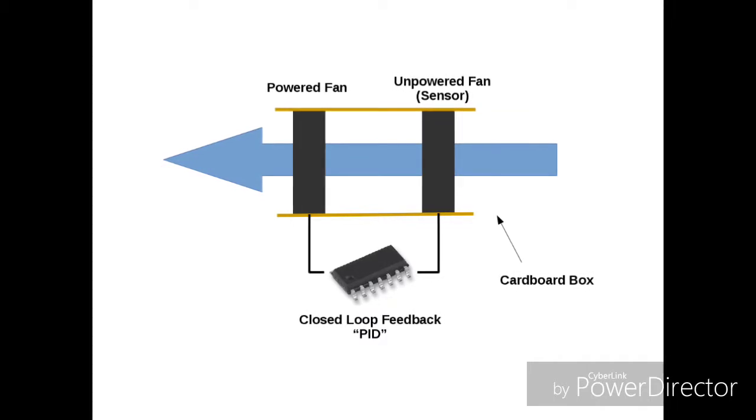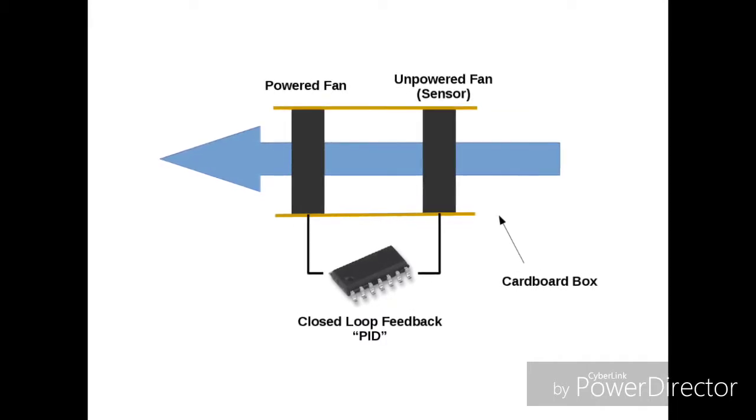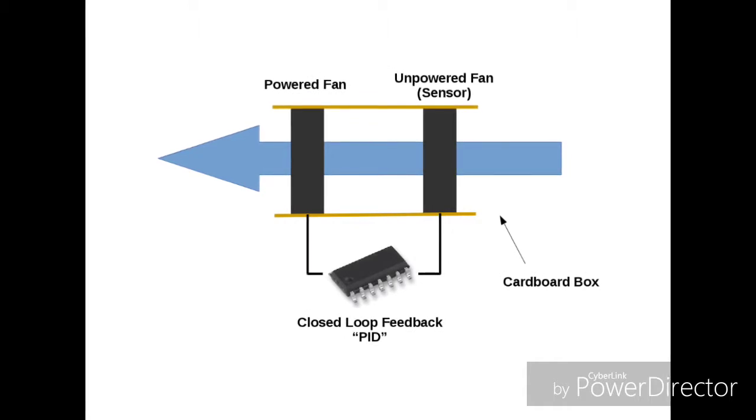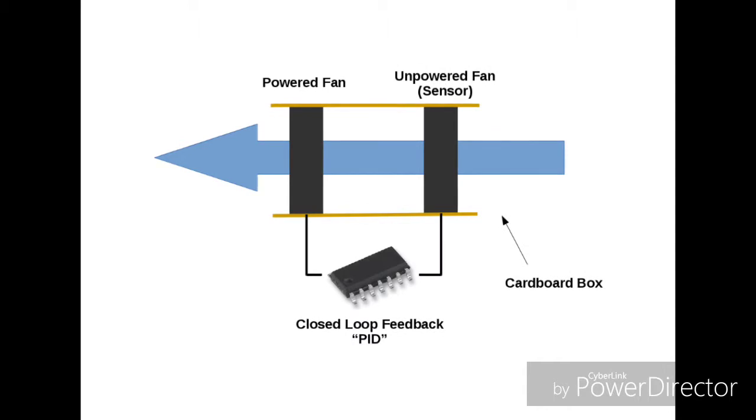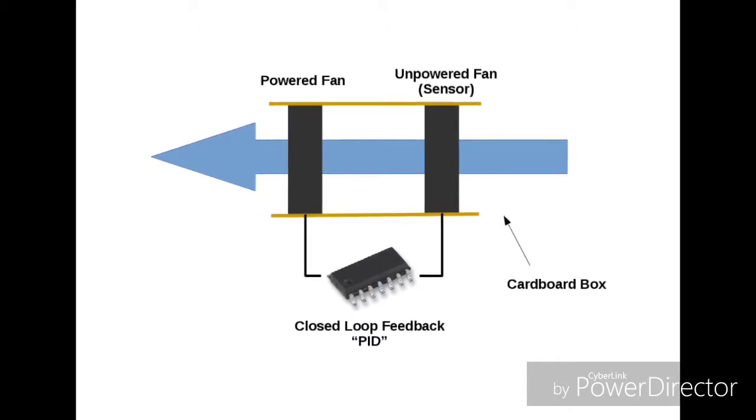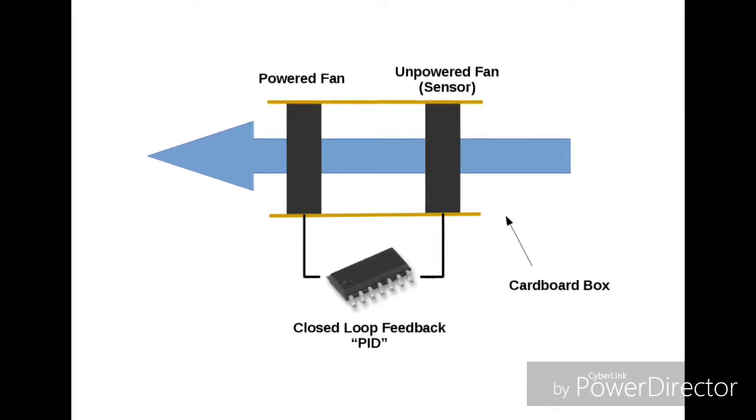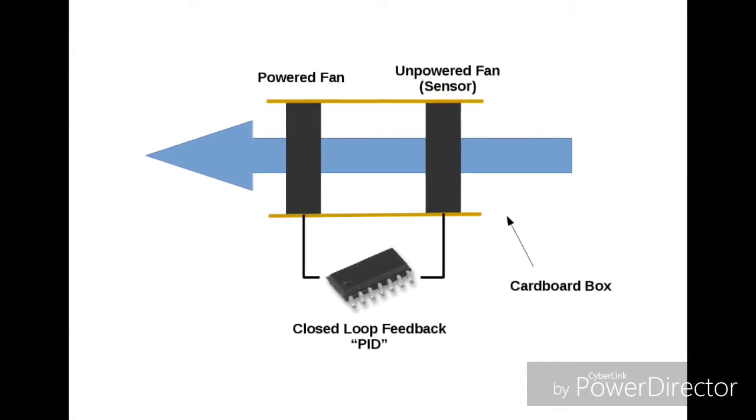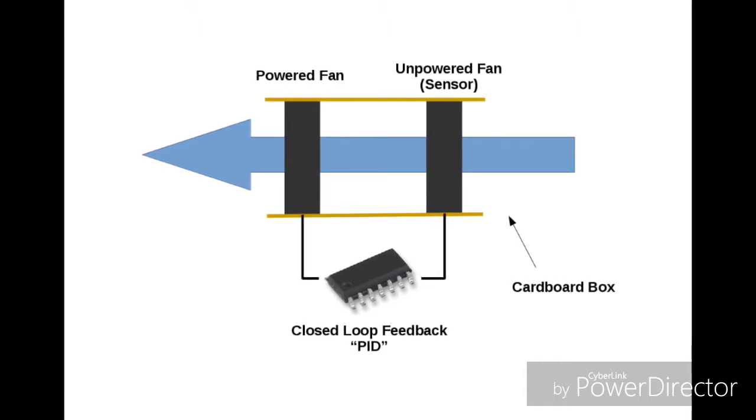What you're seeing here is two fans inside a box. One fan is powered and it's moving air, and the other fan is not powered and it's measuring airflow based on how fast it's spinning. There's a microcontroller controlling that through closed-loop feedback with a PID controller.